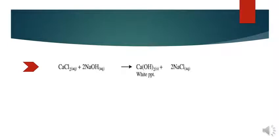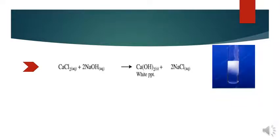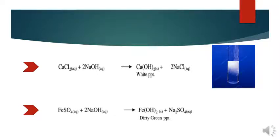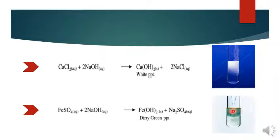Now look at another reaction between CaCl2 and sodium hydroxide. The last reaction for this topic: you have FeSO4 — when you react it with NaOH you get dirty green precipitates. See the diagram — this dirty green color. Please memorize the precipitate colors very well; this is very important for your exams.